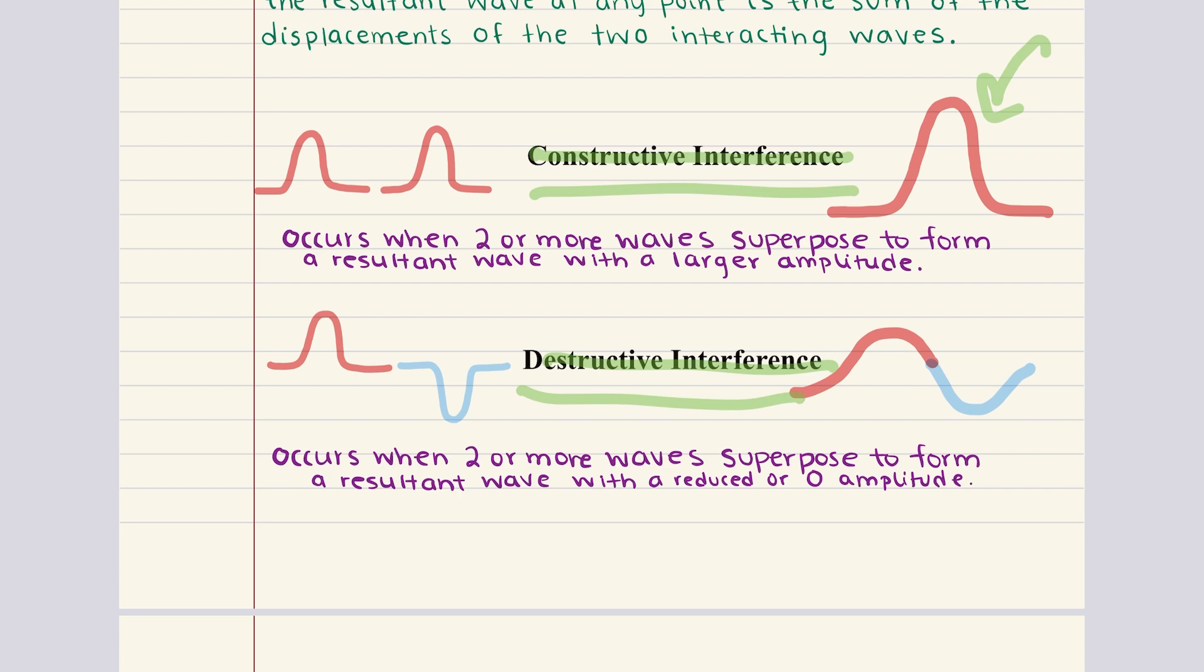Now, if the two waves are not perfectly in phase or out of phase, meaning their peaks and troughs don't perfectly align, then we get a mix of constructive and destructive interference, and this leads to complex wave patterns. The resulting wave's amplitude would fall somewhere between the sum and the difference of the two interacting waves.